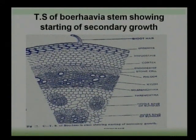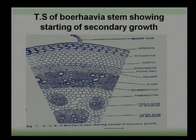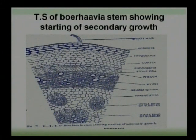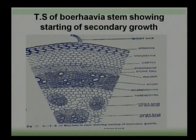All vascular bundles are conjoint, collateral, and open type. Open means cambium is present in the vascular bundle, while if cambium is absent they are known as closed. Between the vascular bundles, thick-walled cells are present; this region is called conjunctive tissue. All conjunctive tissue cells are sclerenchymatous, having very thick cell walls and they are dead cells.